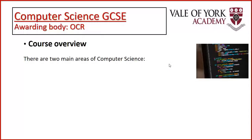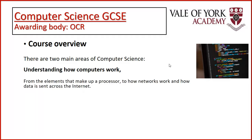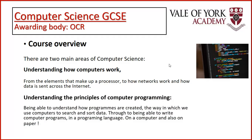The exam board we use for Computer Science is OCR and the course covers two main aspects of Computer Science: understanding how computers work — looking at what a computer processor is, what parts make up a processor, how those parts communicate, how computers communicate with each other, how things work across the network, hardware, software, things like that — and the other aspect is the principles of computer programming, so you'd be looking at what computer programs are, how they're created, and why they're created in the way that they are.